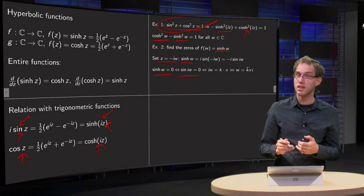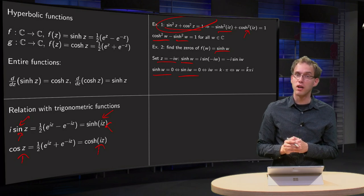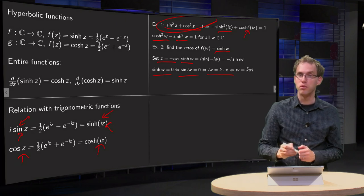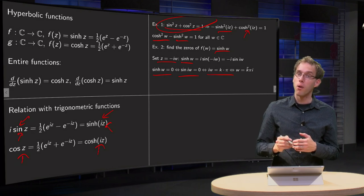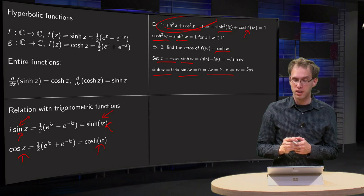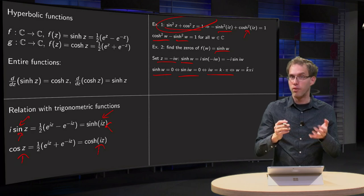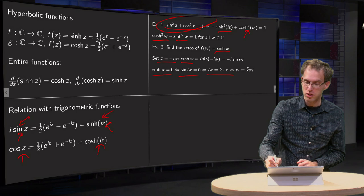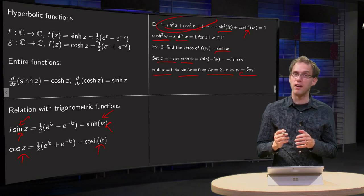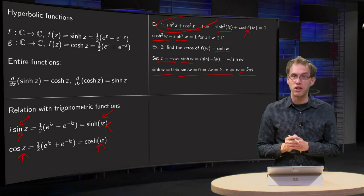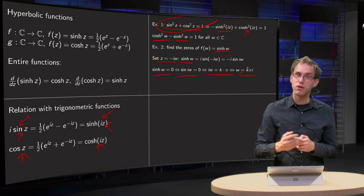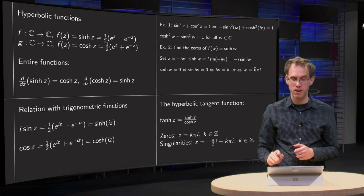You know when this is the case: when the argument of the sine is a multiple of pi, so i times w is a multiple of pi. That means w equals minus k·π·i, where k is any integer in ℤ. So finding zeros of sine hyperbolic is not so difficult, and for the cosine hyperbolic it goes in the same way.